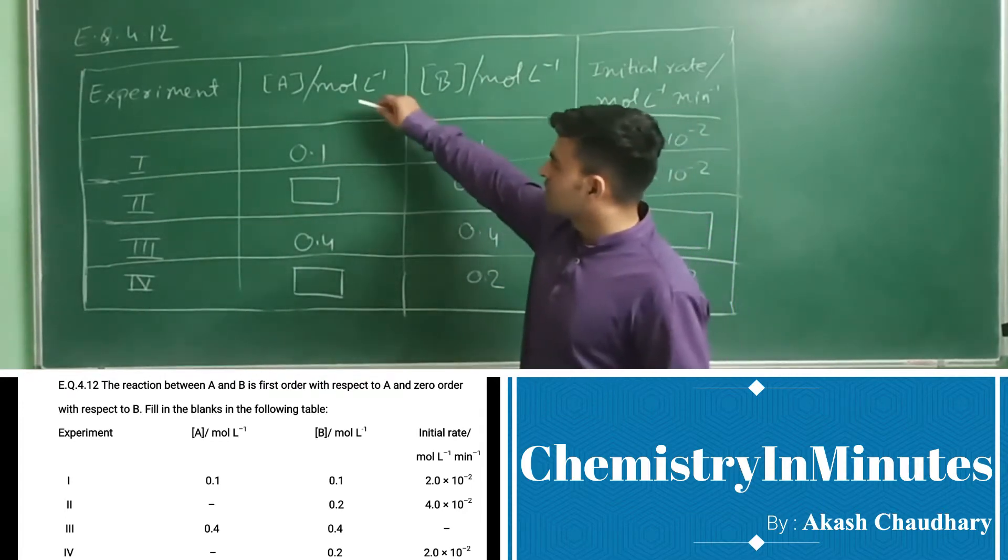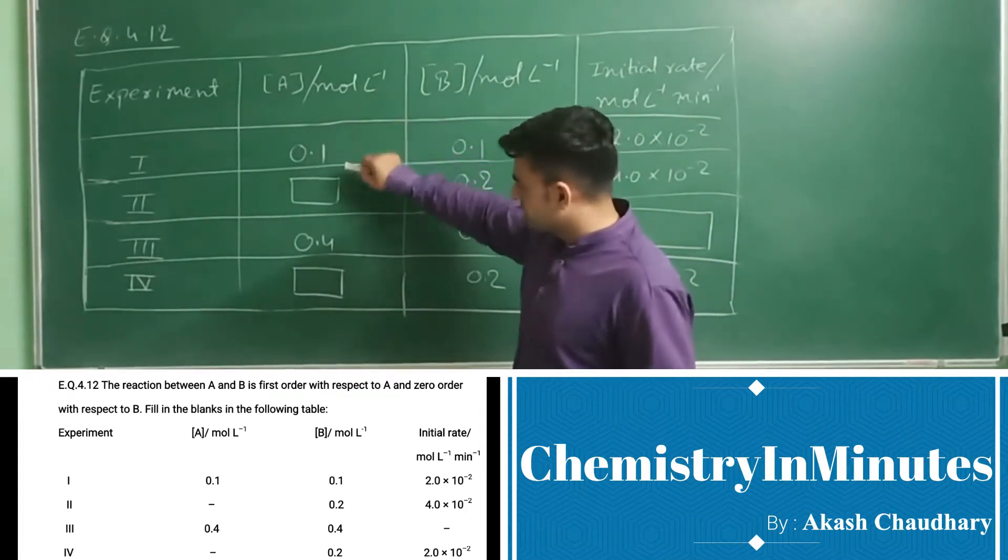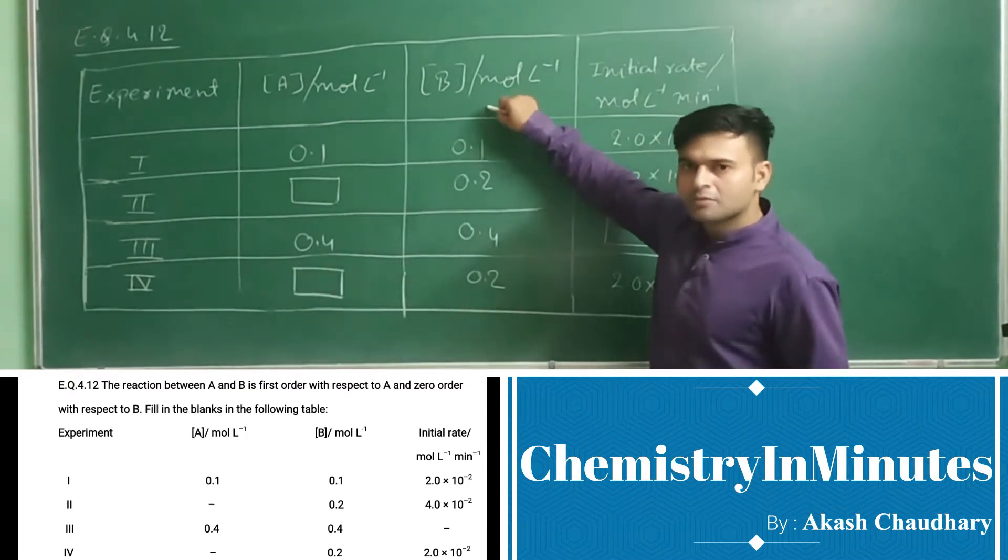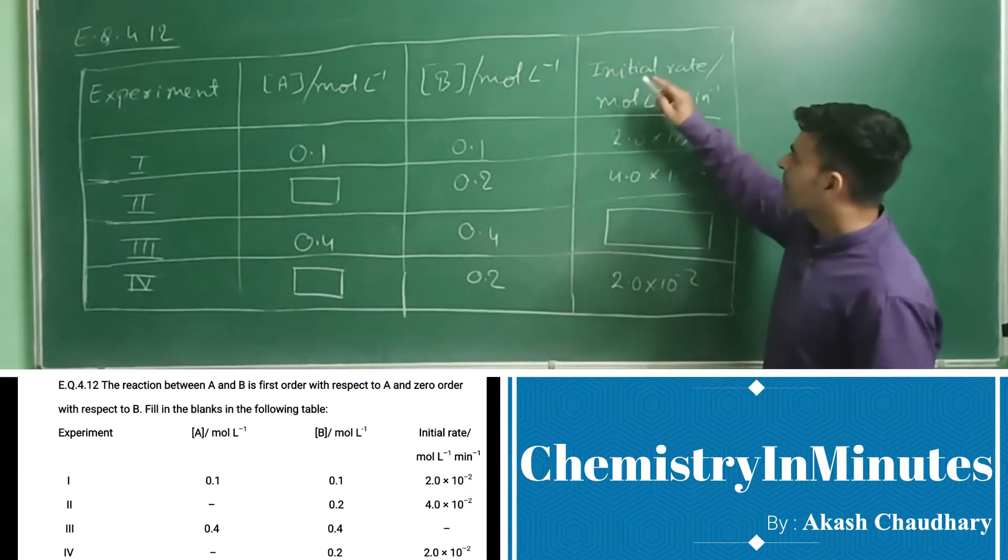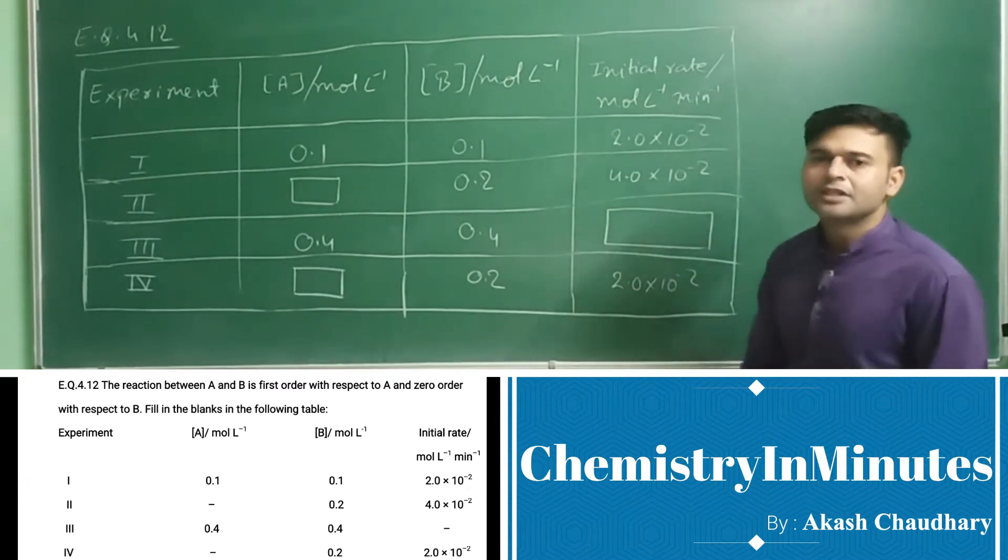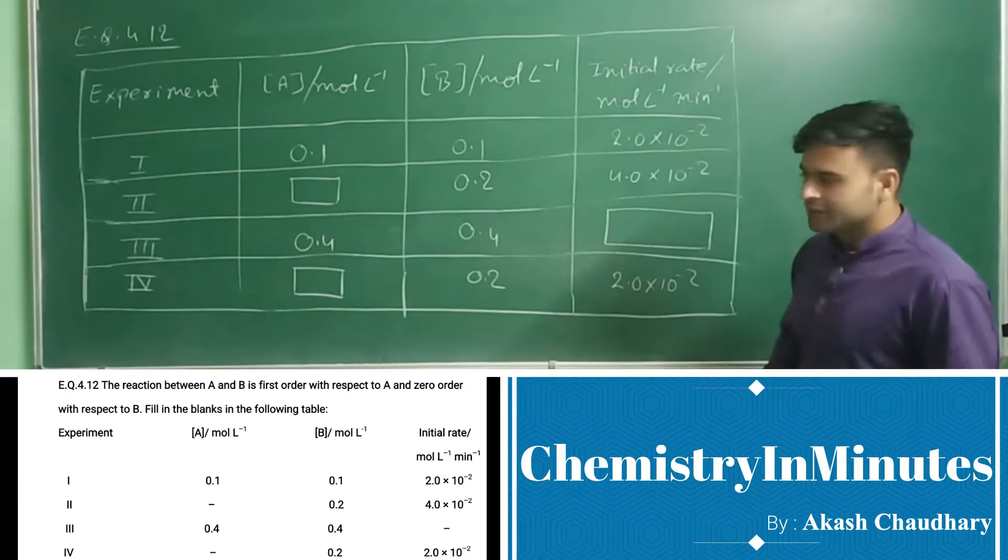In the second column there is concentration of A in mole per liter. In the third column there is concentration of B in mole per liter, and in the fourth column there is initial rate in mole per liter per minute.